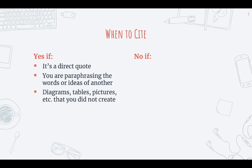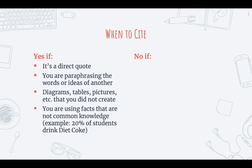You also need to cite diagrams, tables, pictures, images, etc. that you did not create. If you're using facts that are not common knowledge — for example, 20% of students drink Diet Coke — if I put that in a research paper, you'd want to know where did you get that statistic, how did you come up with that? So that's something you would want to cite.